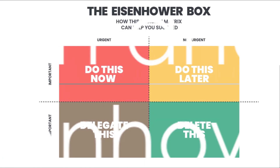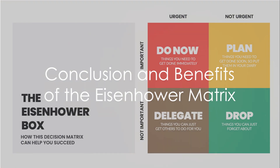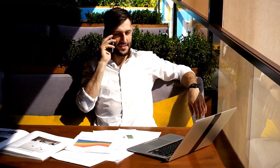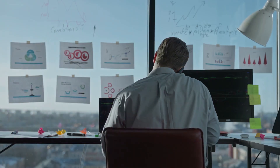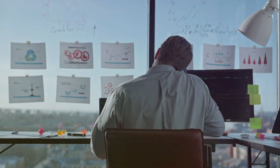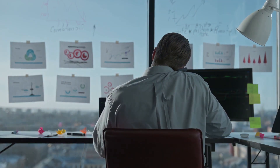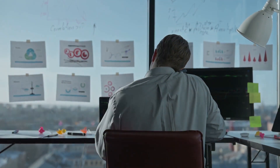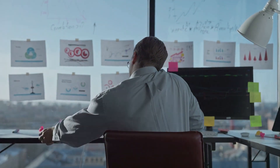In essence, the Eisenhower Matrix is a practical tool for managing time and prioritizing tasks. It encourages real estate professionals to focus on what's truly important, delegate when possible, and eliminate unnecessary tasks. By effectively using this matrix, real estate agents can not only improve their productivity but also achieve a better work-life balance.